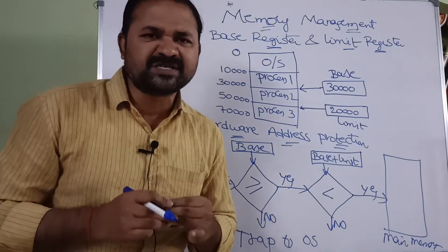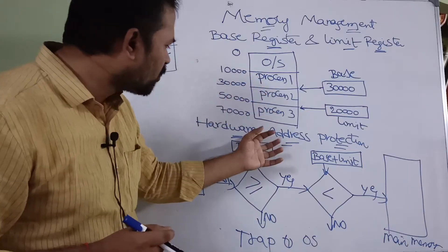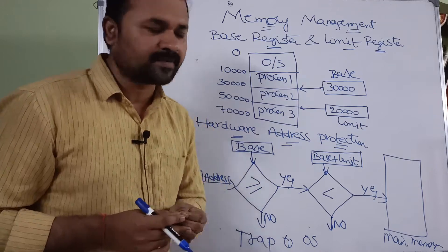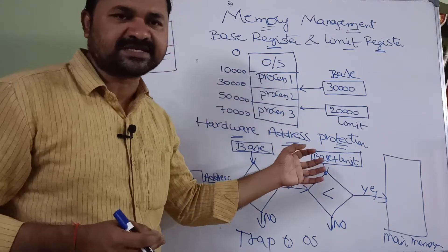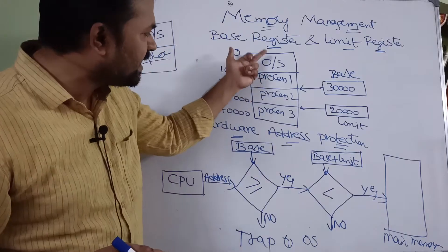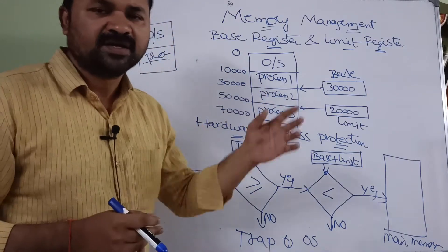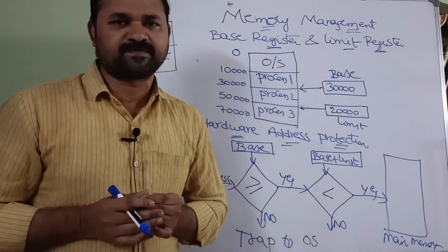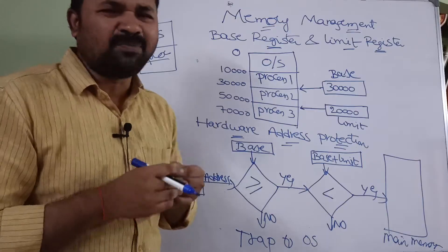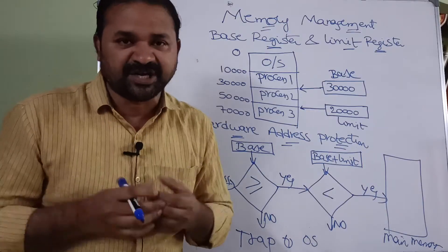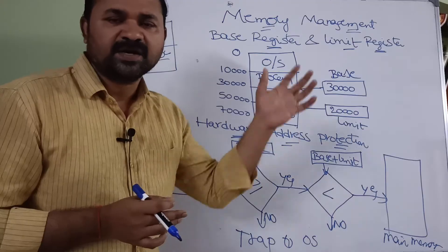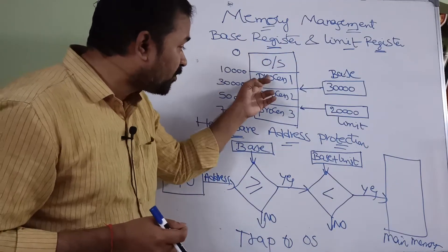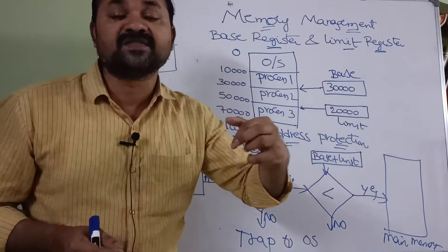There is a possibility that a process can access the operating system area. Process 1 can access process 2 and process 3, and process 2 can access process 1 and process 3, likewise. So the problem is we have to provide protection for the operating system from user processes, as well as protect each process from other processes.